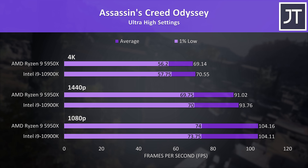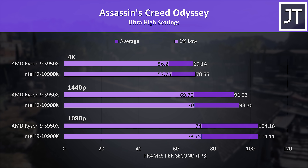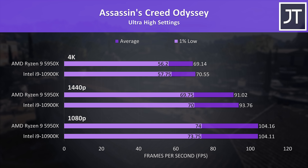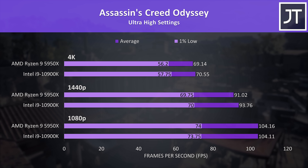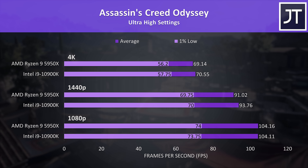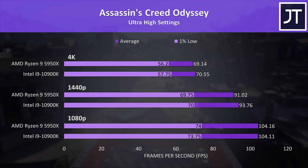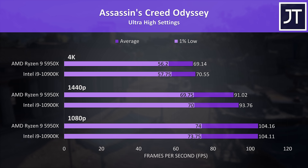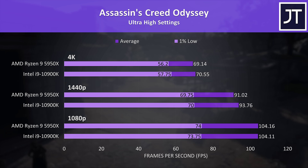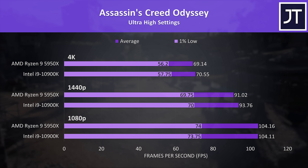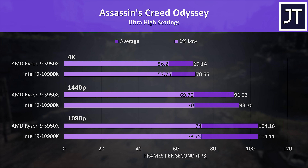Assassin's Creed Odyssey was tested with the game's benchmark — again no major differences here, and no Valhalla as I had to return the 5950X just before it came out. The 10900K was 1-2 FPS ahead at 1440p and 4K, not a difference you're actually going to notice, though the 10900K is also $250 cheaper for similar performance.